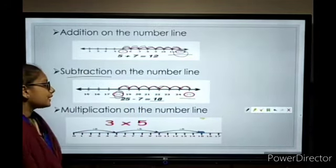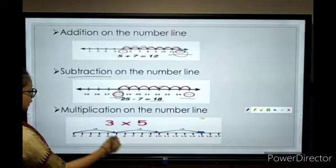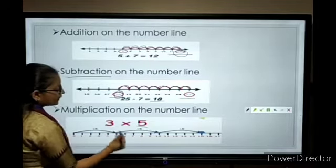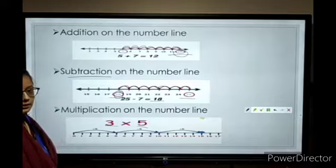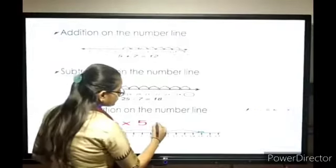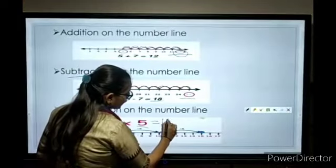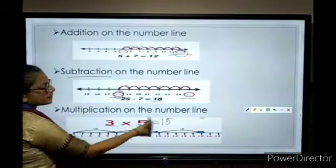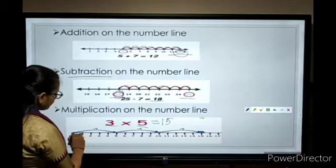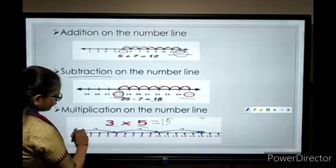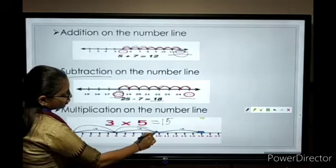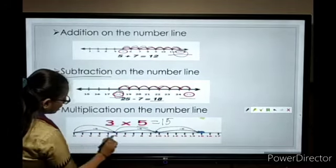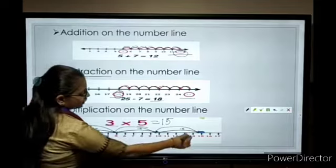Multiplication on the number line. 3 times 5: 3 times 5 equals 15. We count 0 times 5, 1 times 5, 2 times 5, and 3 times 5. Count twice: 1, 2, and 3 gives us 15.